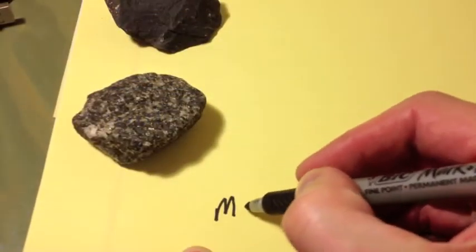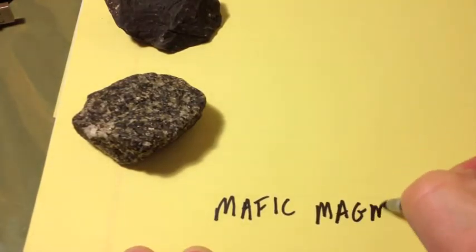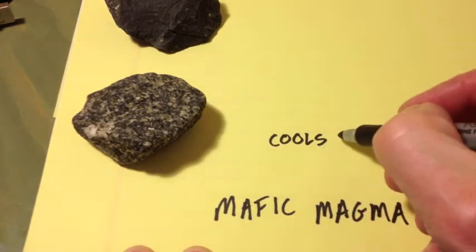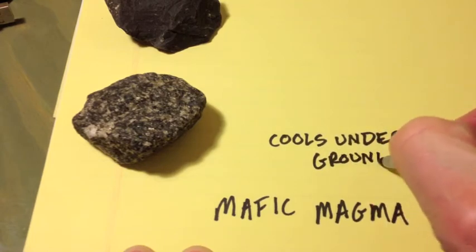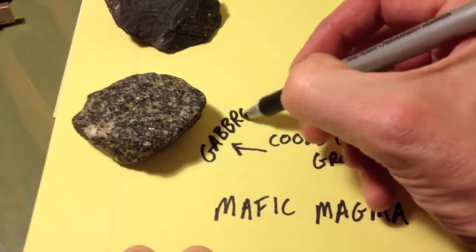So, we'll start with mafic magma. If that mafic magma stays underground, it will cool very slowly and it will grow larger crystals, a coarse-grained texture, and we call that gabbro.